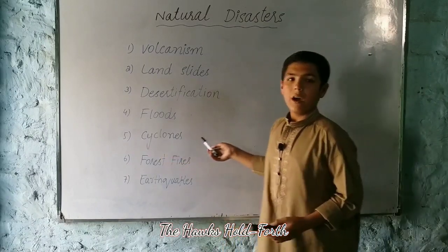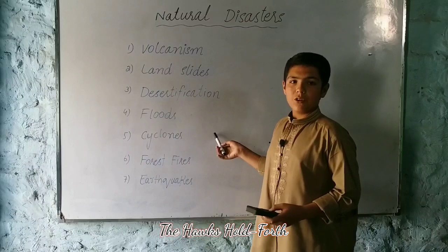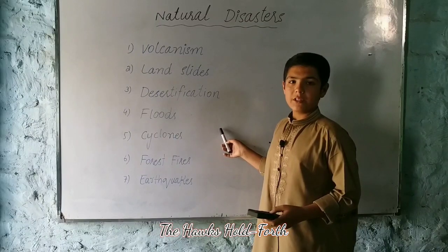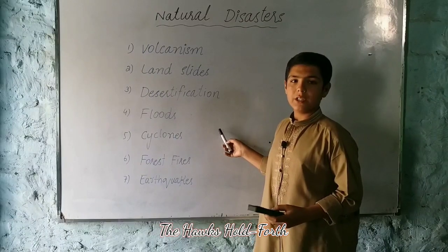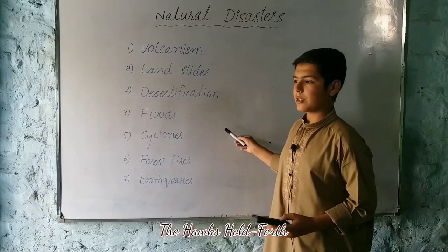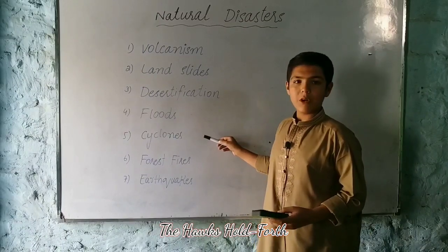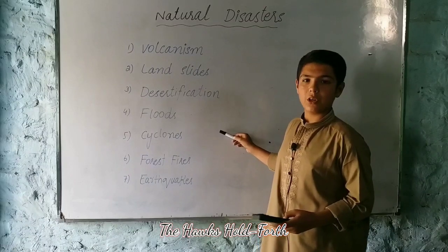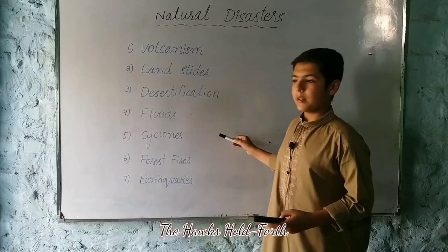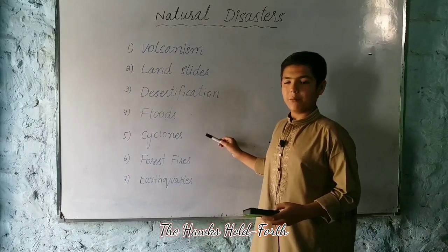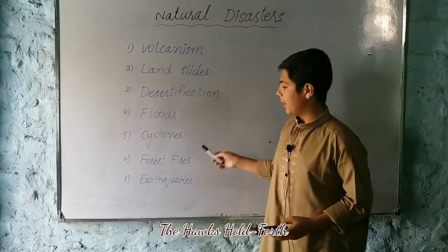Number five is cyclone. A large mass of air which rotates around the ocean is called a cyclone. Cyclones cause a really high amount of destruction to the ocean and the ocean bed.